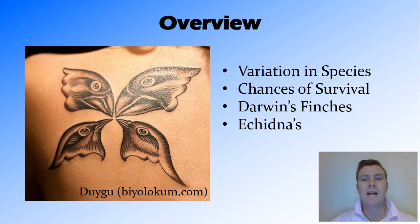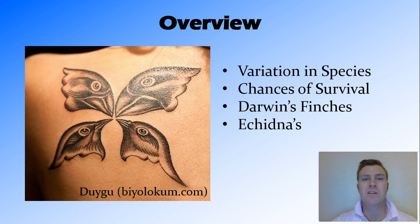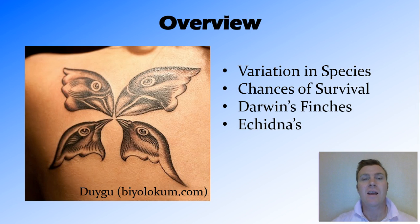In this video we've looked at natural variation that occurs in any species that reproduces sexually. We've talked about how greater variation increases the chance of survival in response to environmental changes. A good example of this is Darwin's finches, which all have different shaped beaks suited to the environment they live in. An Australian example is echidnas — in the north they are more spiny, lighter in colour, and smaller than their southern counterparts. Thanks for watching, guys.